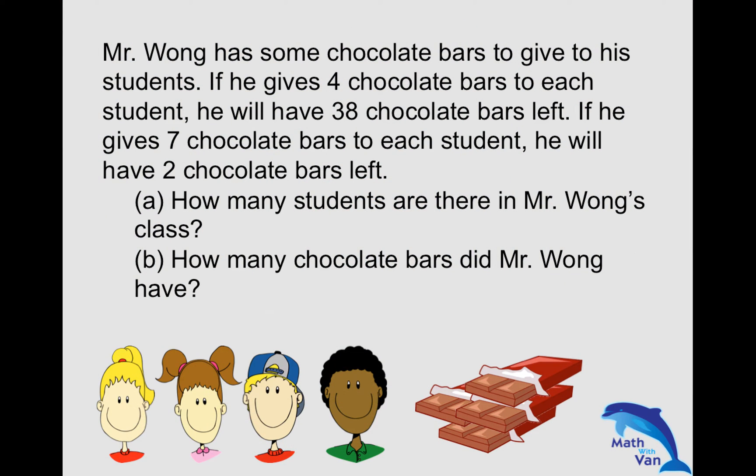Mr. Wong has some chocolate bars to give to his students. If he gives four chocolate bars to each student, he will have 38 chocolate bars left. If he gives seven chocolate bars to each student, he will have two chocolate bars left. How many students are there in Mr. Wong's class, and how many chocolate bars did Mr. Wong have?